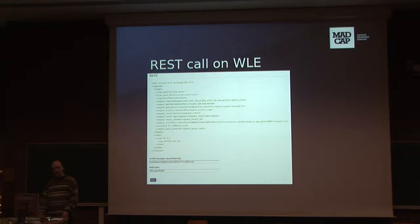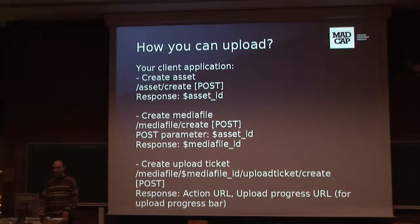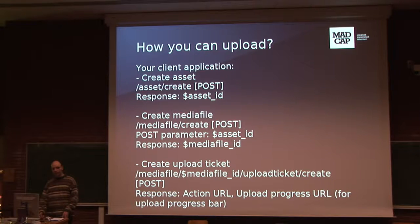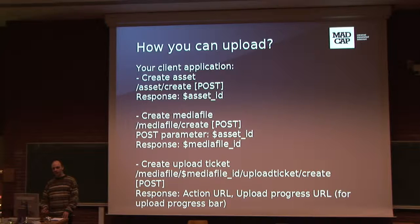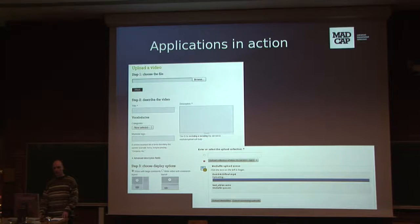The White Label demo frontend has a nice tool for developers where you can test your REST calls. How can you upload a video? Your frontend application should create an asset with the asset-create REST call — the response is a unique asset ID. Then you can create a media file — the response is a unique media file ID. Then you can create an upload ticket, which is for security. The response is an action URL where your form should be submitted, and there is an upload progress URL for jQuery progress bars. You can see the progress bar, upload fields, metadata fields and others in real applications.